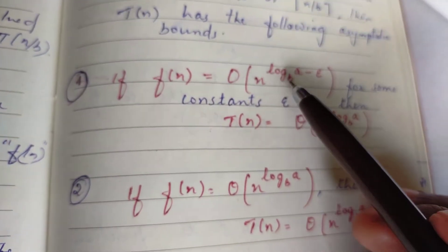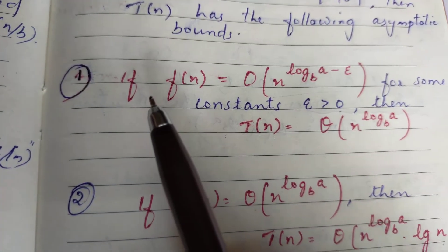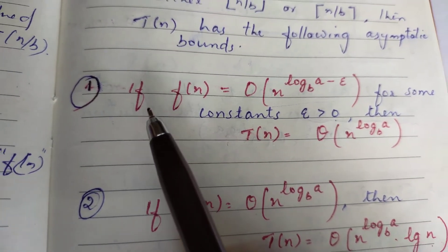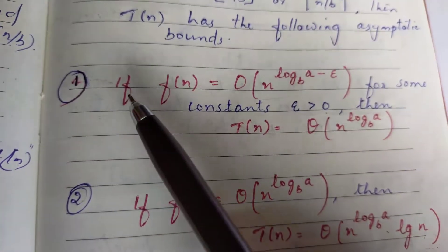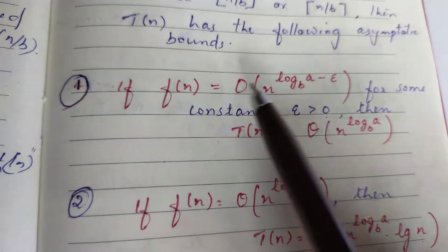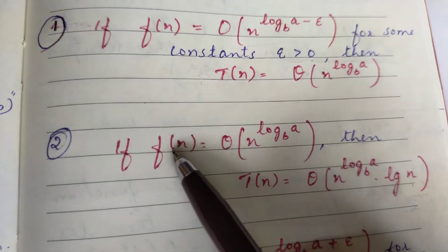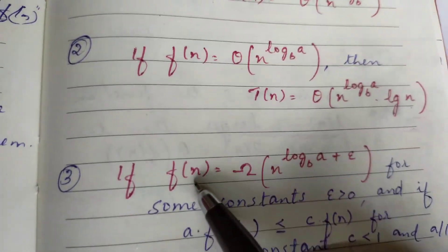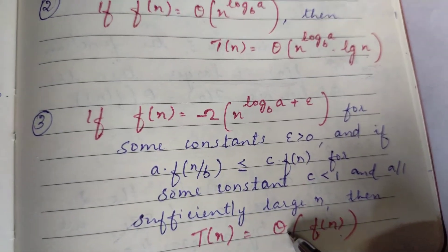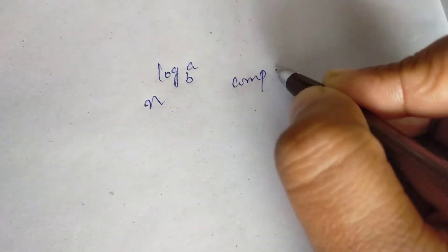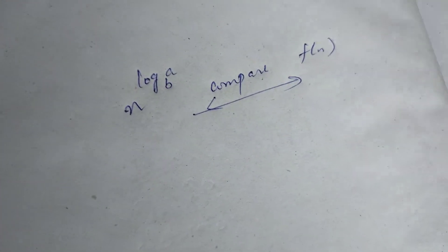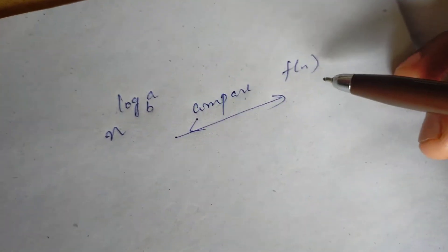To study the third case of Master's Theorem, we can also study the proof. In each case, the first, second, and third, we get the corresponding T(n) value. We are comparing n^(log_a base b) with f(n) to determine which case applies.